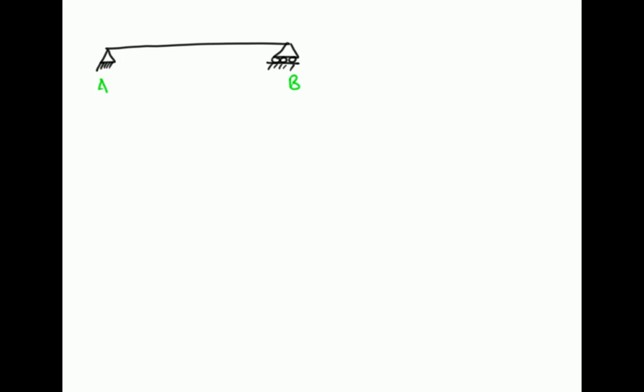A is restrained, or provides restraint, and therefore can generate a reaction in the vertical direction and in the horizontal direction. B is on rollers, and so it can generate a reaction in the vertical direction only. It cannot generate a horizontal reaction.